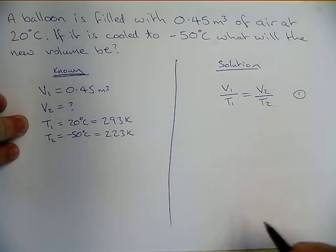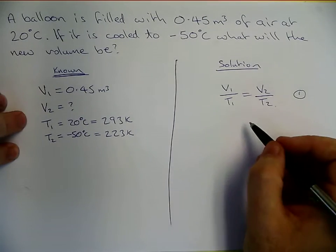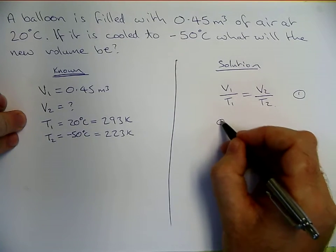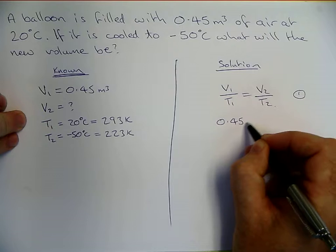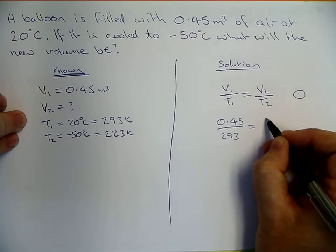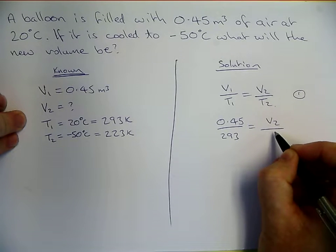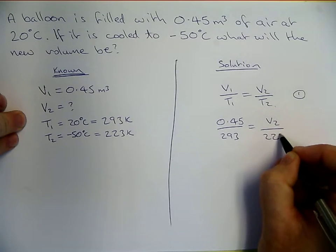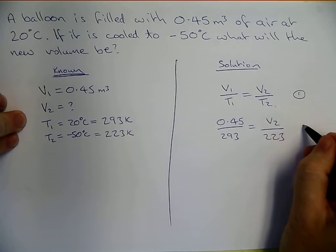Now we're going to put the numbers in. So V1 is 0.45 divided by 293. That equals V2 divided by 223.